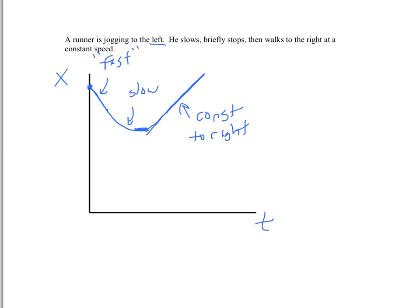So as long as you know that the slope of a position versus time graph is the velocity, you can try to reason out and just double check your answer. Make sure that your graph matches the description. Jogging to the left, okay, it's negative. Slowing down briefly stops, goes right at a constant velocity.